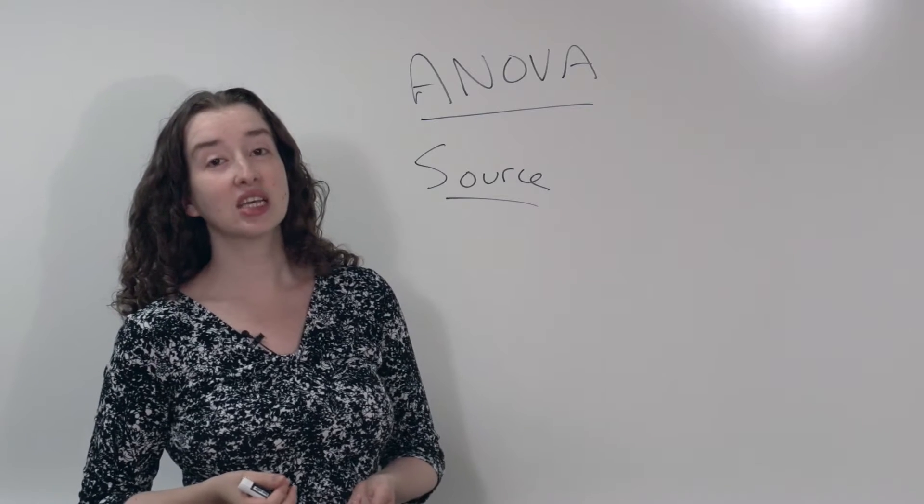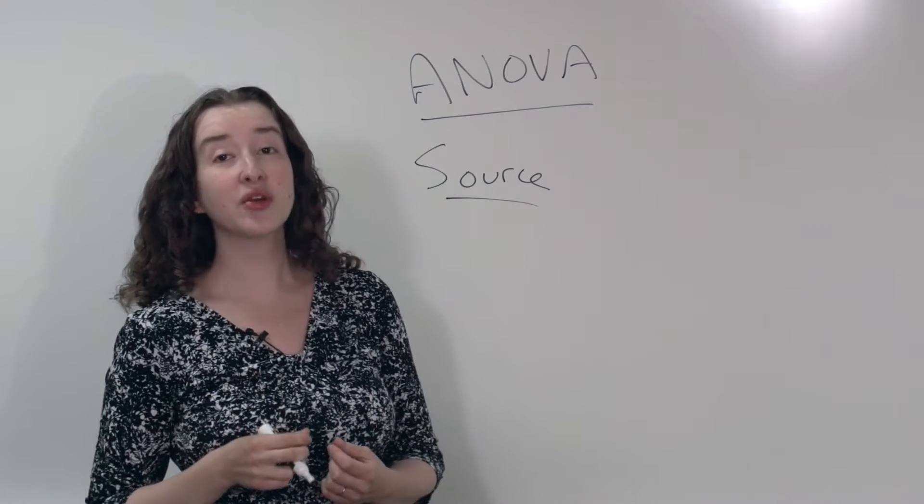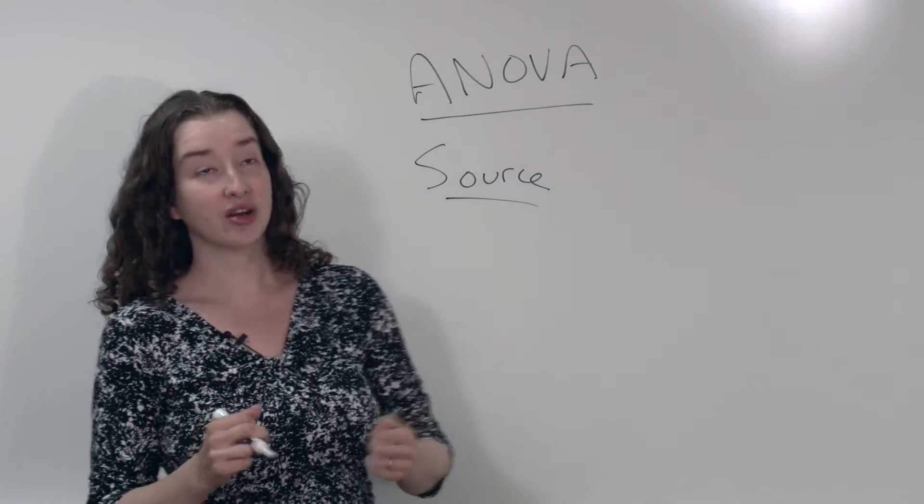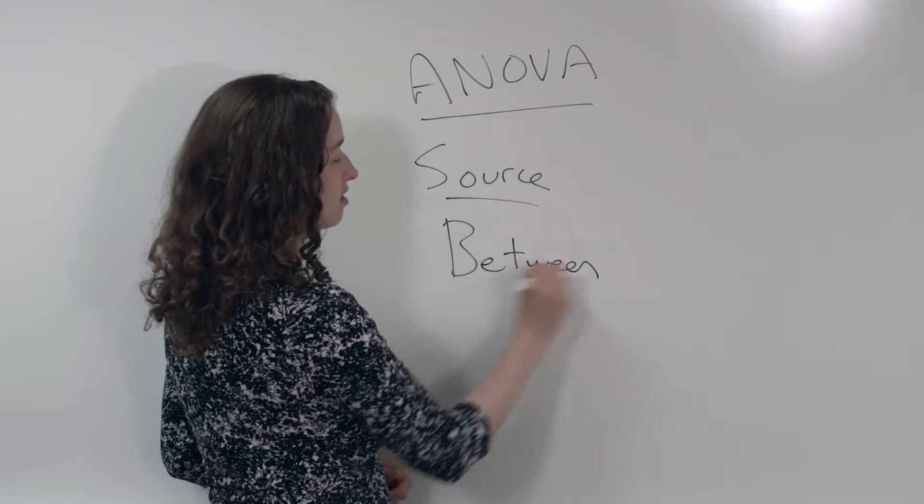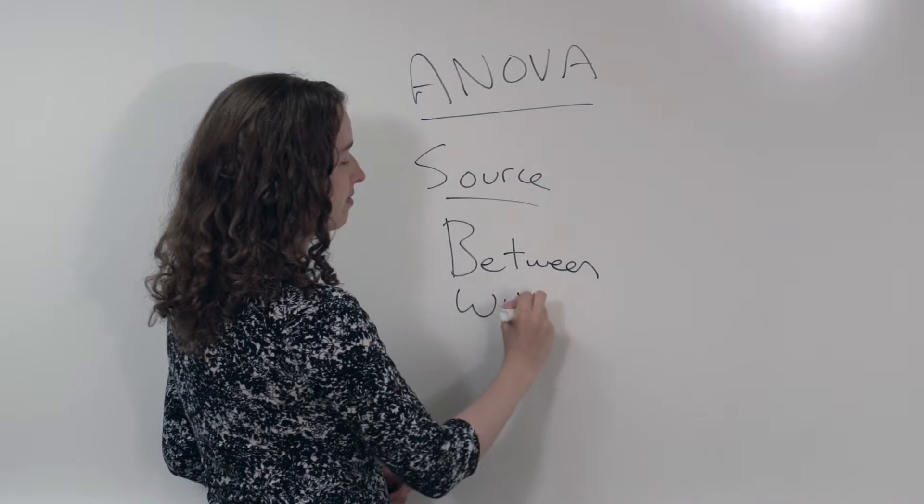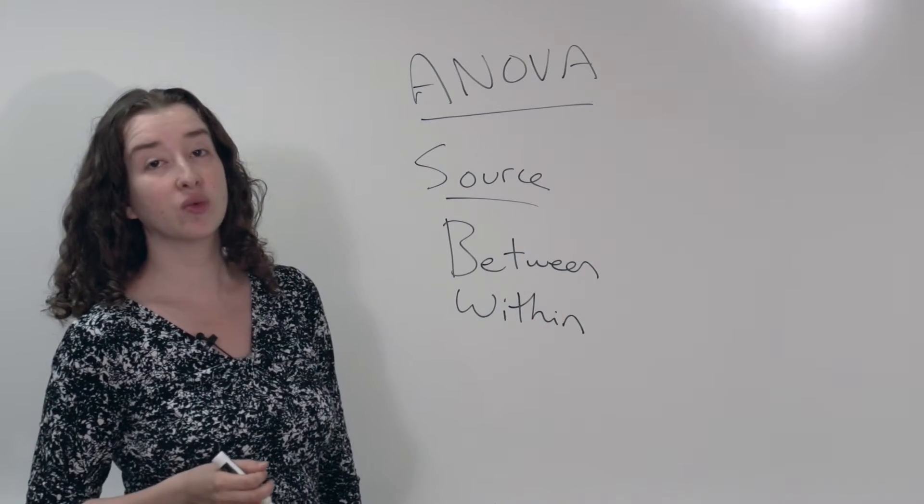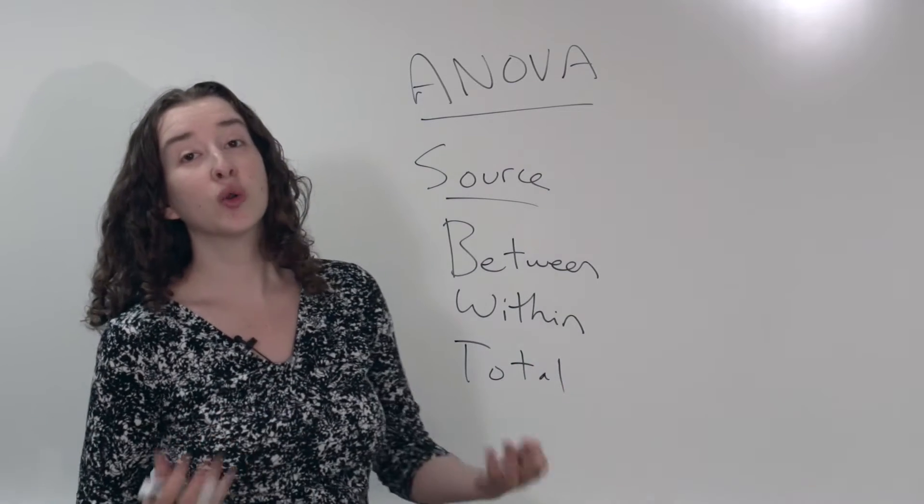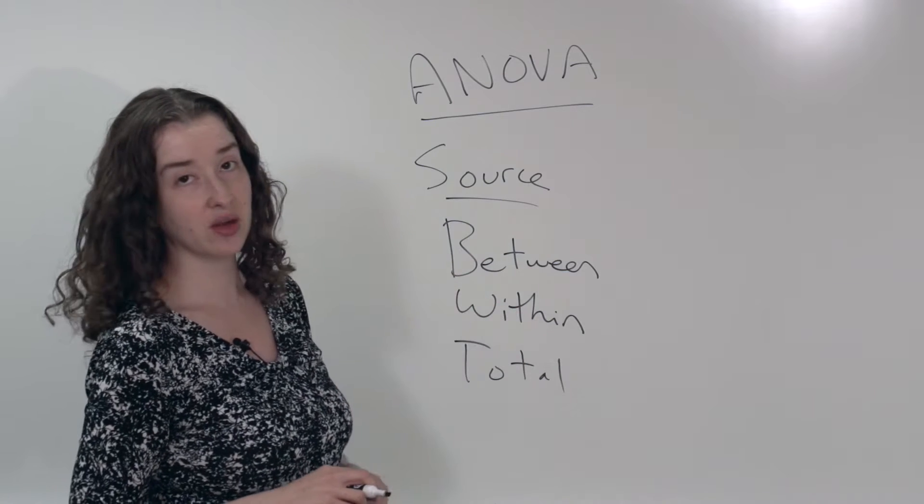The sources of variation that we've been discussing are between and within. Units differ from each other either because they're in different groups, or because within each group there is some error. Between, within. In addition to between and within, I'm going to make a row called total, because there's also a total amount of variation, not only variation decomposed into between and within.